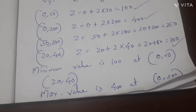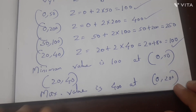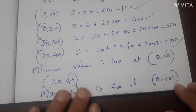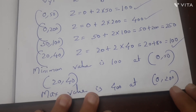So the minimum point gives the minimum value of the objective function Z.